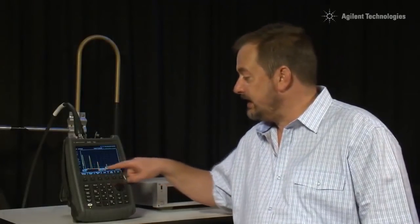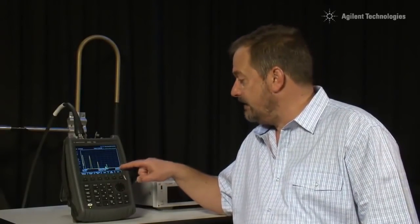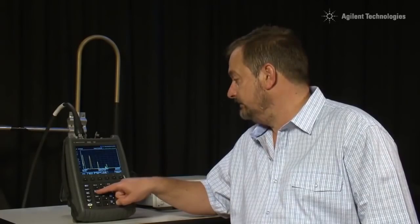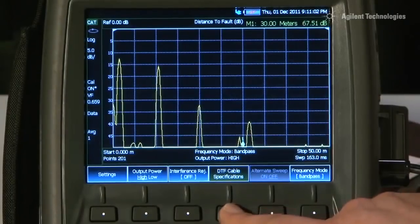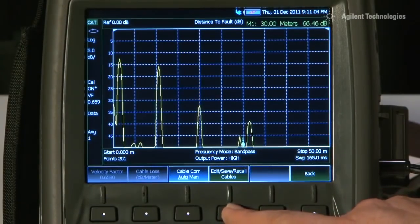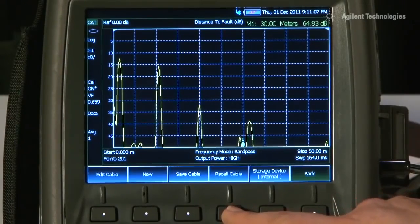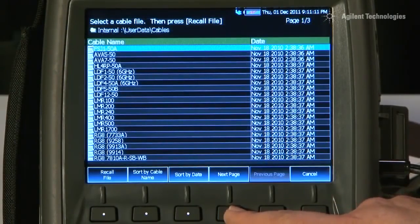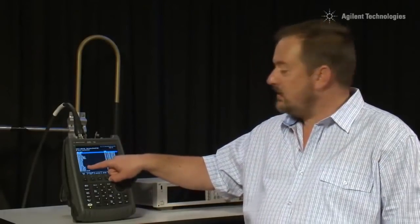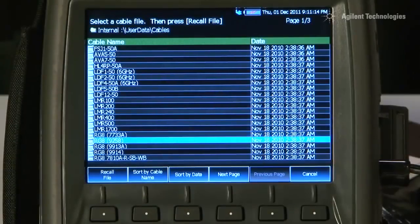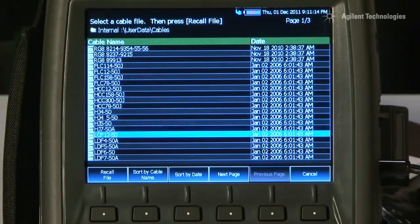Now, to make sure we have got the distance scale set up correctly for this type of cable, I am going to press Measure Setup and press DTF Cable Specifications and we will recall a cable type.